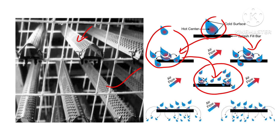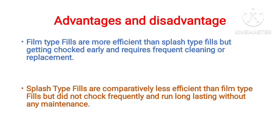These fine droplets then fall on the fill below, where they again get converted into even finer water particles and the surface area increases further. This process repeats at each level of fill, continuously increasing the surface area of water. Due to this increased surface area, more air-water contact takes place and cooling tower efficiency increases.